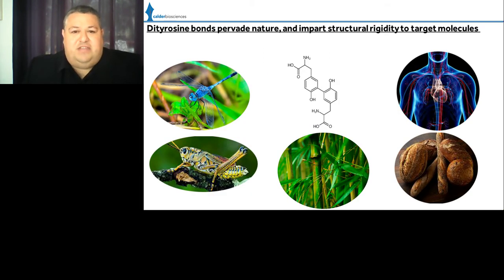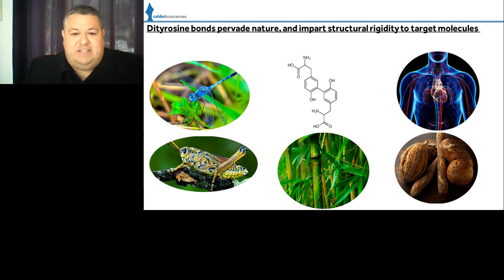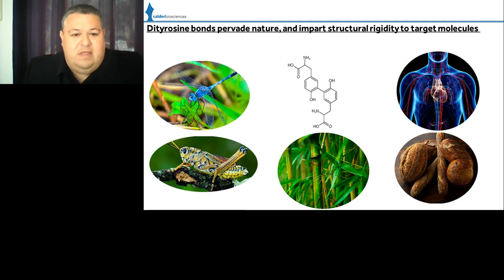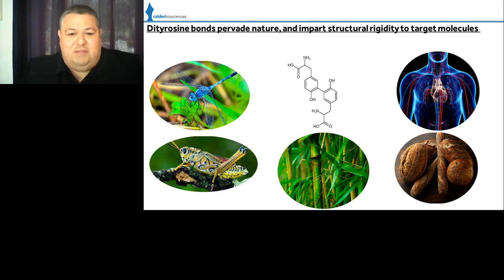Dityrosine bonds are present throughout nature in areas where a great deal of structural rigidity is required. The dityrosine bond itself is zero-length, occurring between tyrosine side chains that need to be within a few angstroms of each other — it is a direct carbon-carbon bond. They are found in the walls of bamboo, in resilin (a highly viscoelastic protein in the joints of grasshoppers and dragonflies), naturally in the human aorta, and are even formed during the process of bread making.